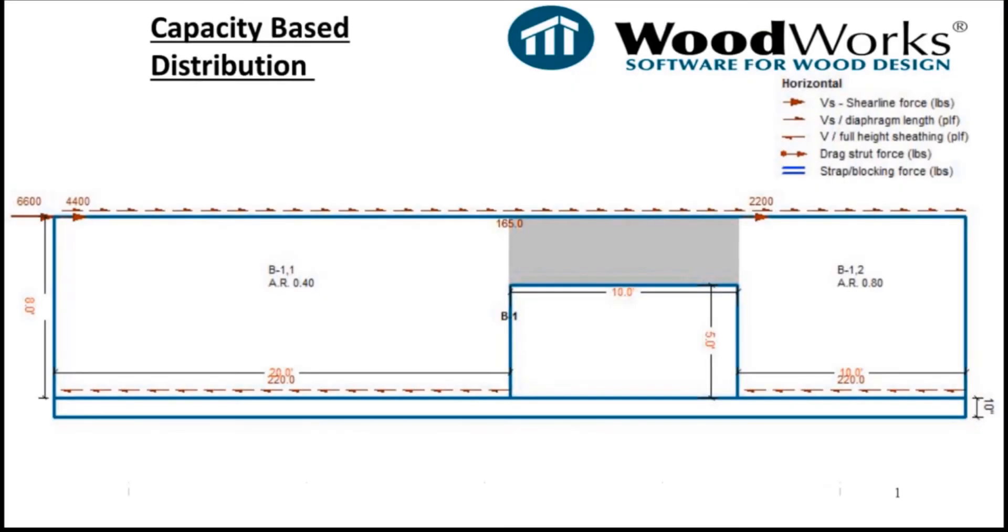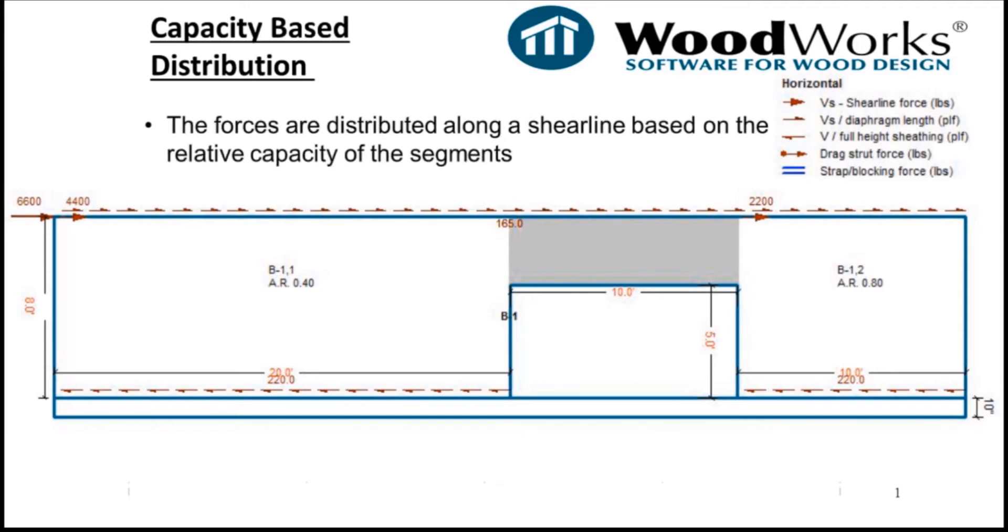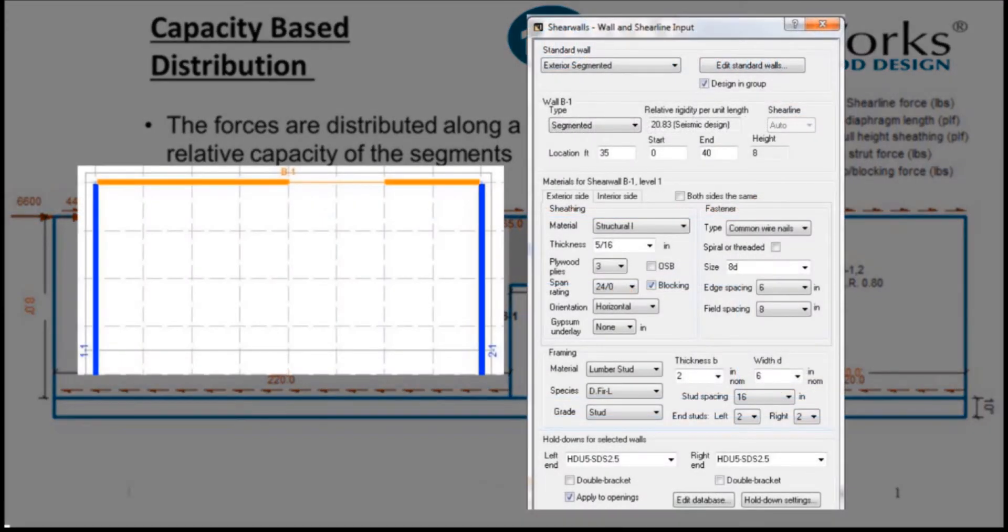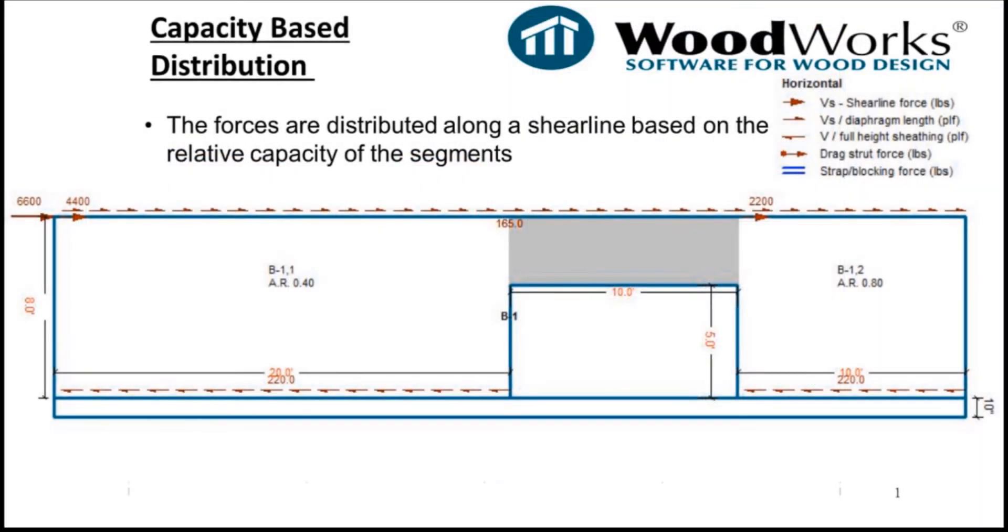As you may know, capacity-based distribution is easier to calculate. This is where forces are distributed along a shear line based on the relative capacity of the segments. The capacity of the segments is then used to approximate the stiffness. In this example, the construction of the two wall segments are exactly the same, with symmetrical hold-downs on each segment end.